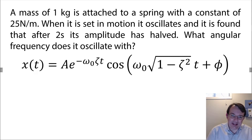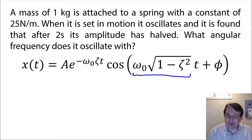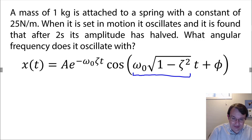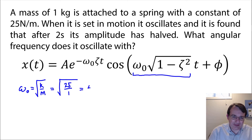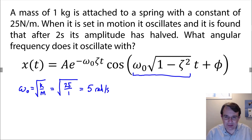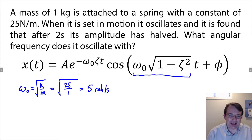We write down the displacement function for an underdamped harmonic oscillator. The angular frequency of oscillation is not equal to the natural frequency of the system, although it depends on it. So first we calculate the natural frequency: for a mass-spring system that is the square root of k over m. With k equal to 25 newtons per meter and m equal to 1 kilogram, the square root of 25 is 5 — giving us a natural frequency of 5 radians per second. However, that is not the frequency the oscillator actually oscillates at, since it is underdamped.